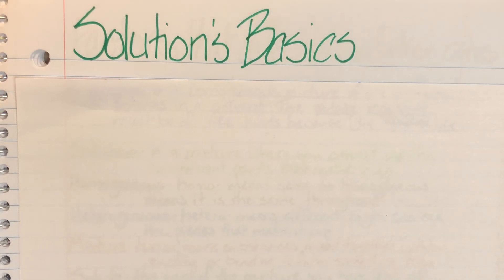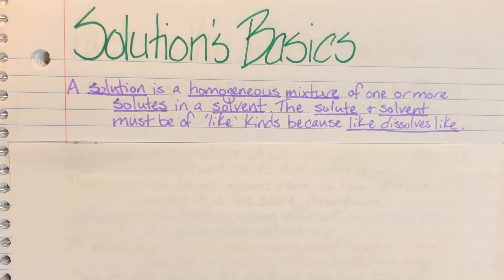Today we will be going over some very basic information about solutions. A solution is going to be a homogeneous mixture of one or more solutes in a solvent. The solute and solvent must be of like kinds because like dissolves like. Now I know at this point this sentence makes almost absolutely no sense to you, so we're going to go over some basic definitions that we're going to need to know to attack the solutions unit.